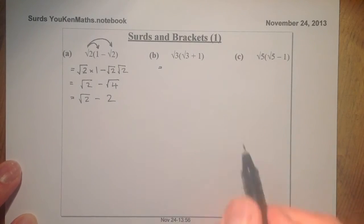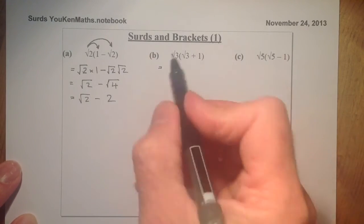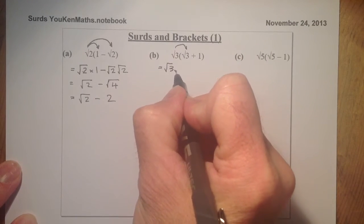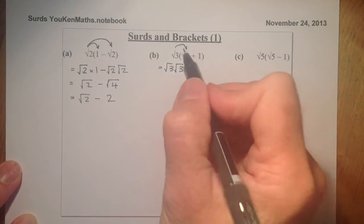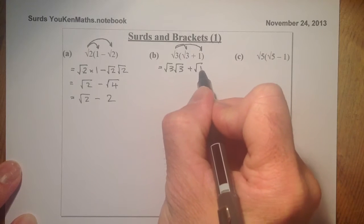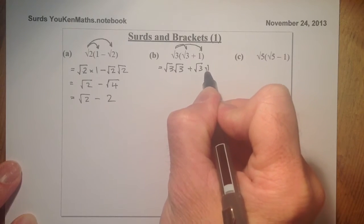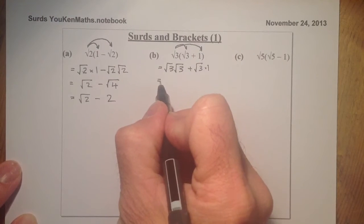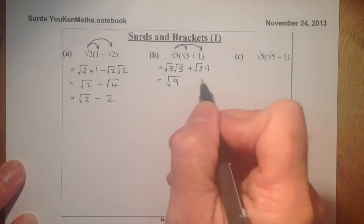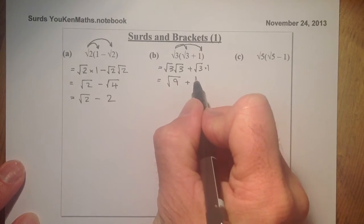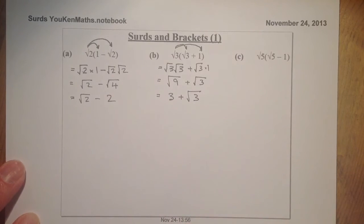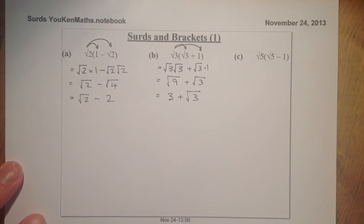Same as before, I'm going to multiply the first terms out. That's going to be root 3 times root 3. And the second term multiplied out is plus root 3 times 1. When I gather that together, I know that root 9 goes to 3 — I'll write down root 9 first — plus root 3. So that gives me 3 plus root 3. I can't simplify that any further — that's the final answer.